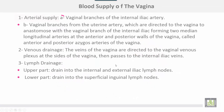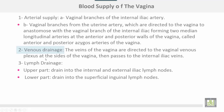The blood supply of the vagina — arterial supply comes from vaginal branches of the internal iliac and vaginal branches from the uterine artery, which anastomose with the vaginal branch of the internal iliac, forming two median longitudinal arteries at the anterior and posterior walls of the vagina, called the anterior and posterior azygos arteries of the vagina. Venous drainage: the veins of the vagina drain to the vaginal venous plexus at the sides of the vagina, then pass to the internal iliac veins. Lymphatic drainage: the upper part drains into internal and external iliac lymph nodes; the lower part drains into the superficial inguinal lymph nodes.